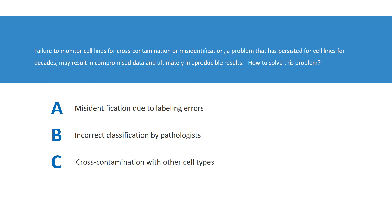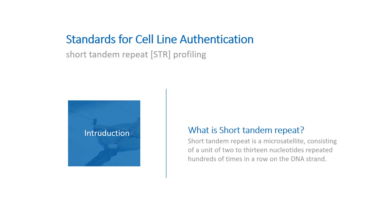Different genomic technologies have been applied to cell line authentication, but only one method — short tandem repeat profiling — has been the subject of a comprehensive and definitive standard. An international team of scientists is preparing a consensus standard on the authentication of human cells using short tandem repeat profiling.